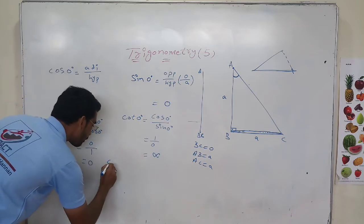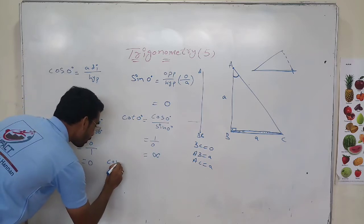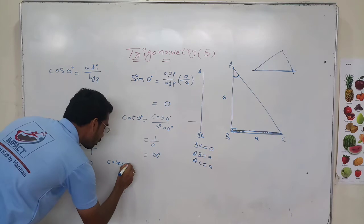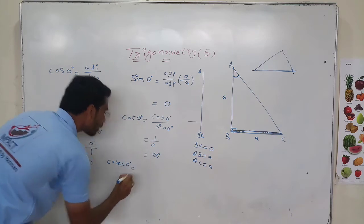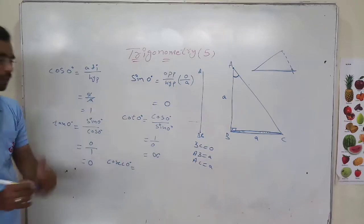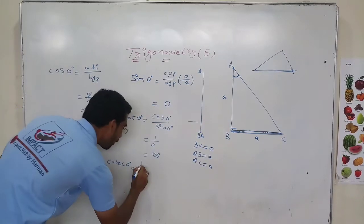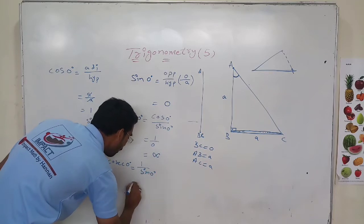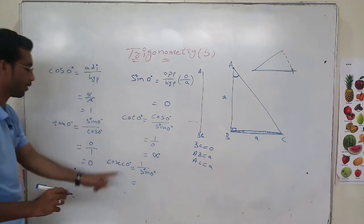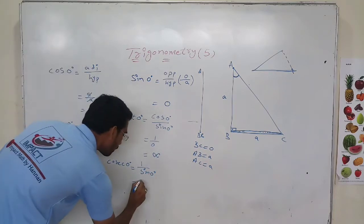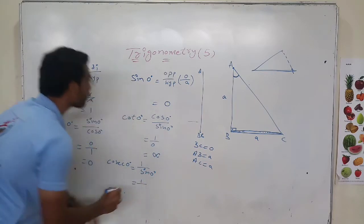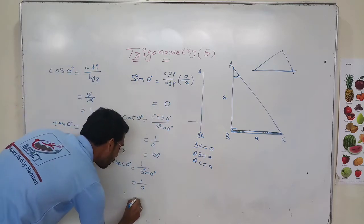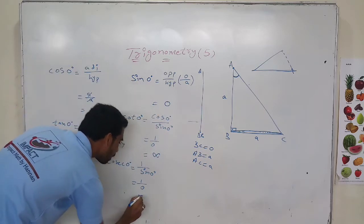Now we will see cosec 0 degrees. Cosec theta equals 1 by sin theta, so 1 by sin 0 degrees. Sin 0 is 0, so cosec 0 equals 1 by 0, which is not defined.